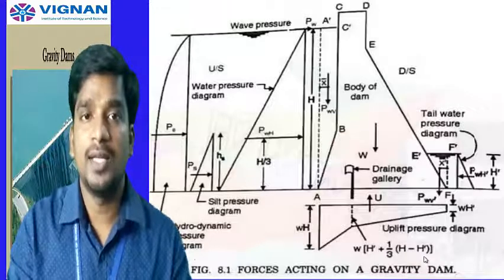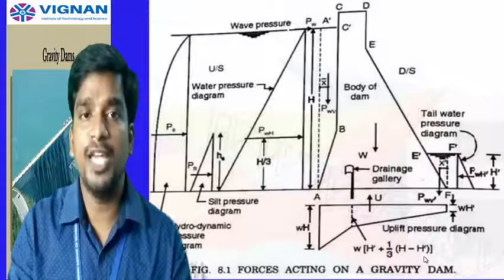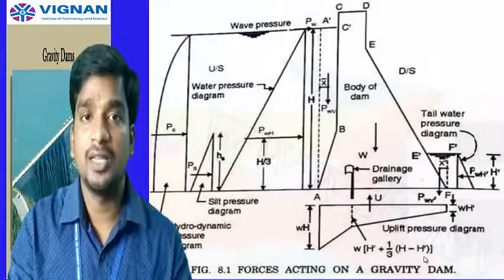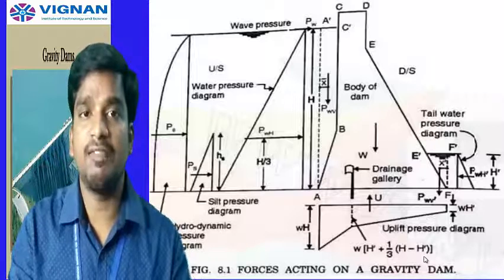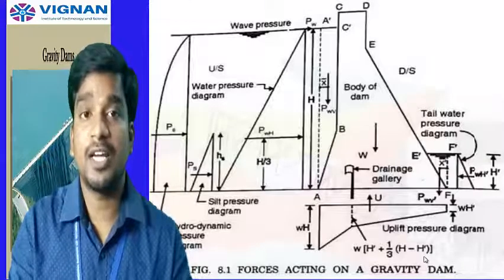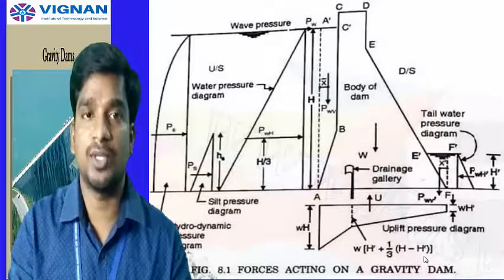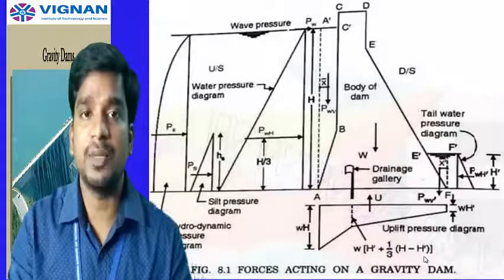Now let us look at a pictorial representation showing the different forces acting on a gravity dam. Out of the eight forces, only a few major ones are typically considered. The remaining forces — such as ice pressure and wind pressure — depend on the location. If winds are heavy, wind must be considered. If it is a cold environment, ice pressure must be included. If the dam is in an earthquake-prone zone, earthquake forces must also be considered.